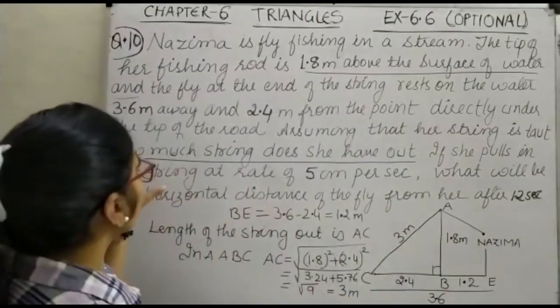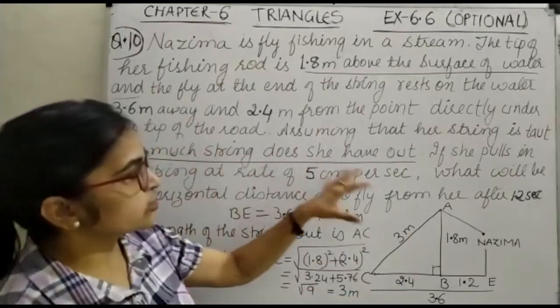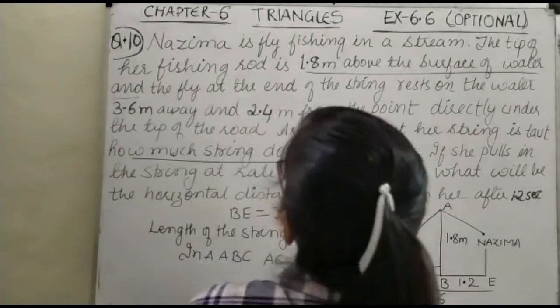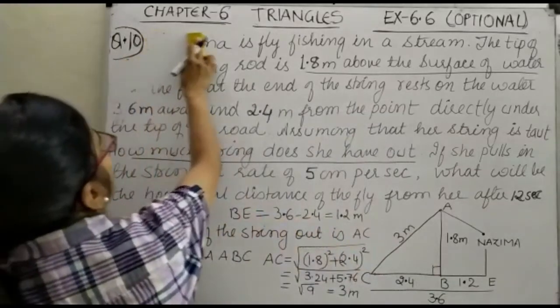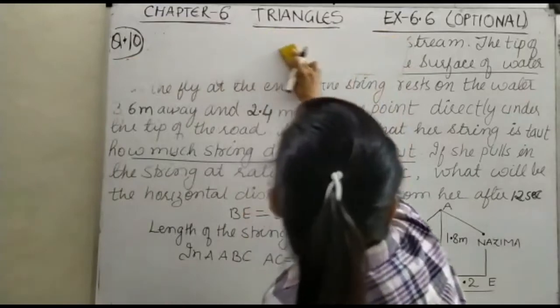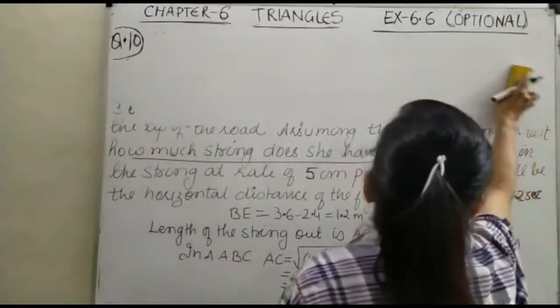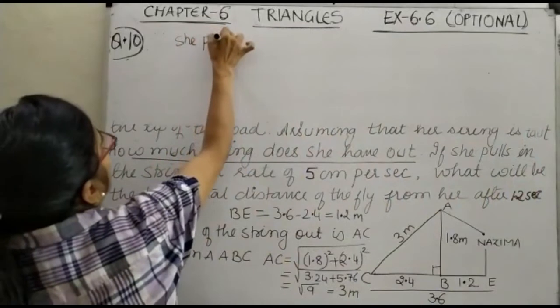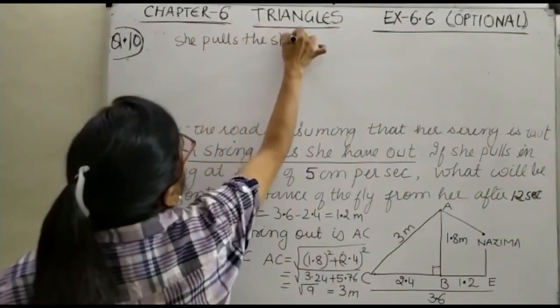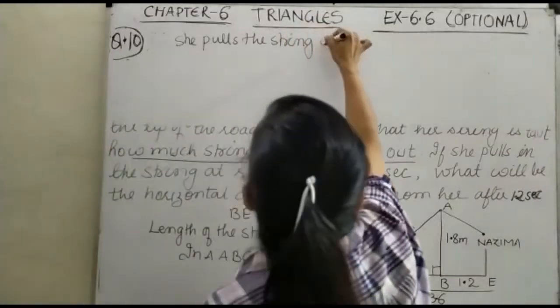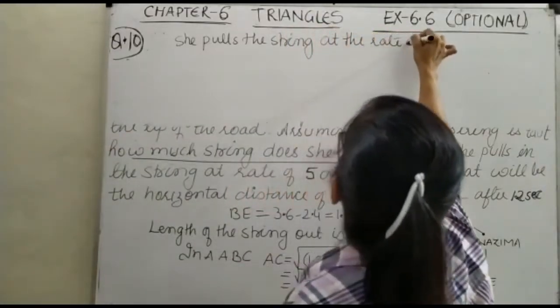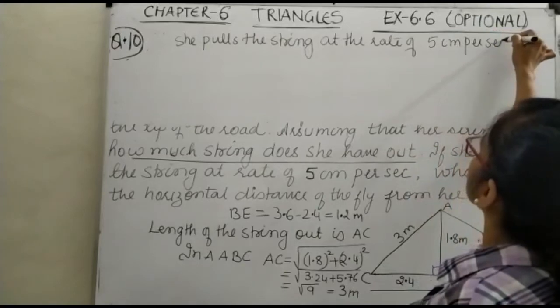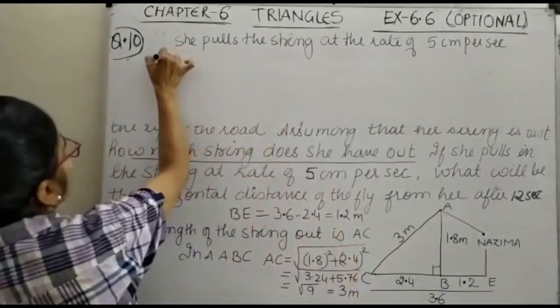So we have just given the answer for the first one. How much string does she have out? Now, if she pulls in the string at the rate of 5 centimeter per second, we are taking the question ahead.